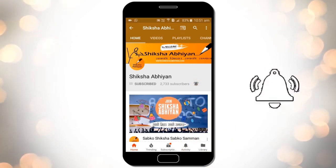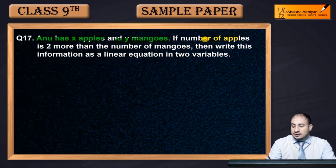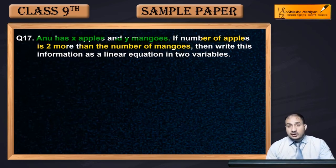Question 17 is: Anu has x apples and y mangoes. The number of apples is 2 more than the number of mangoes.